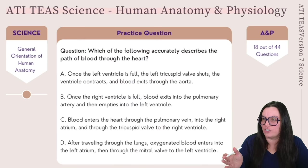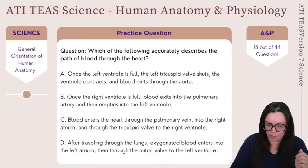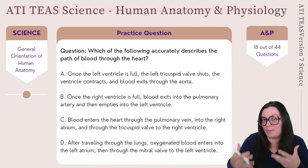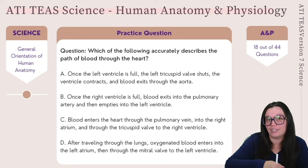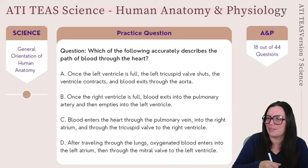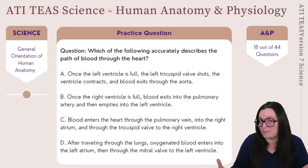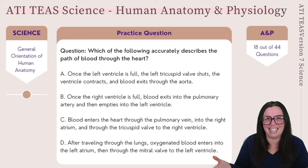Back to our question: out of all the answers listed, the only one that makes sense is answer D. After traveling to our lungs, that oxygenated blood — remember they pick up oxygen in the lungs — enters into our left atrium. That makes sense, it goes to the left side of our heart. Then it goes through our mitral valve, also known as our bicuspid valve, ultimately leading into the left ventricle. So the correct answer is D.